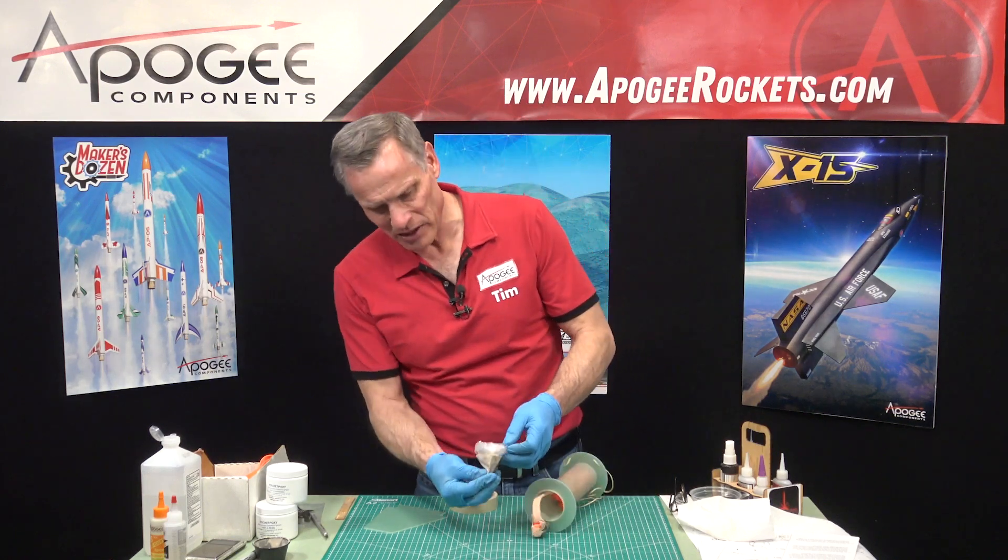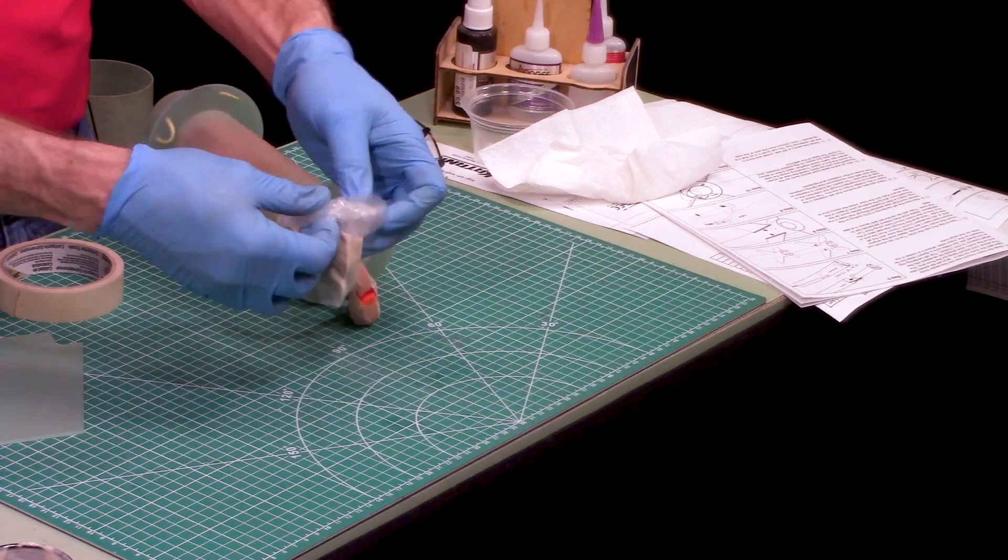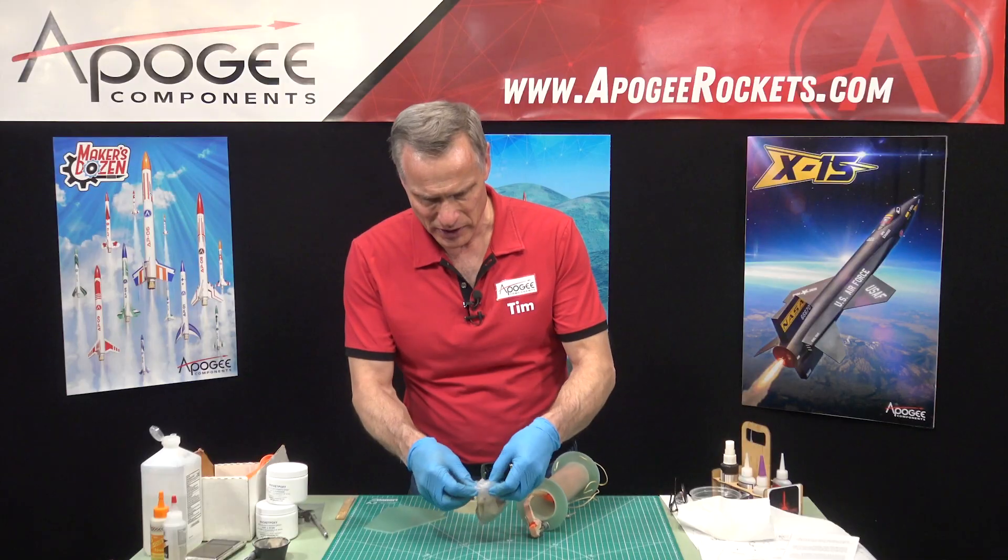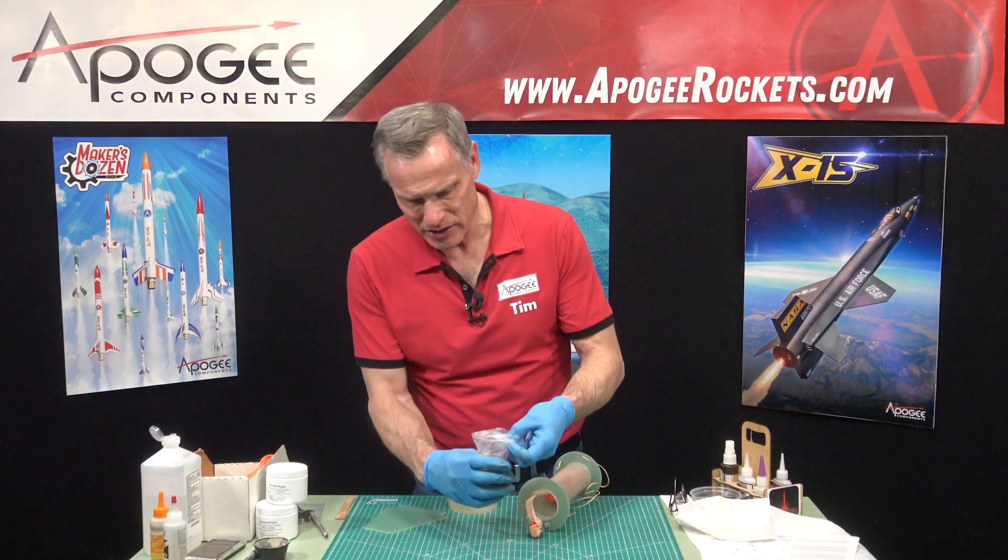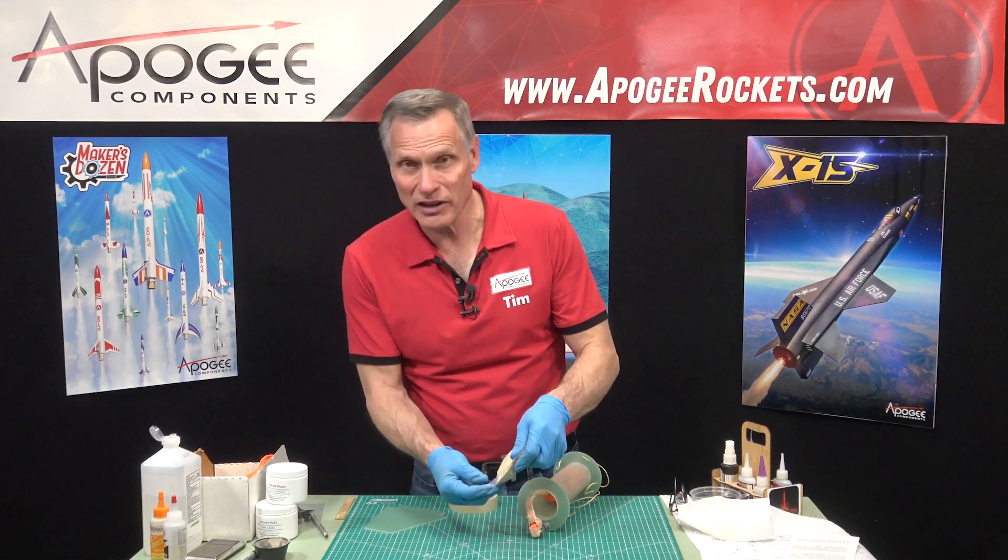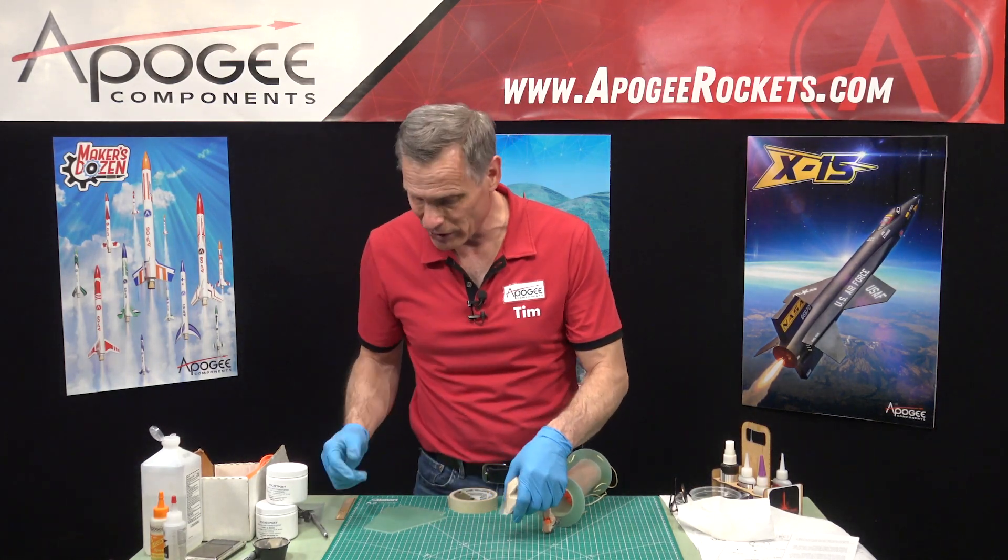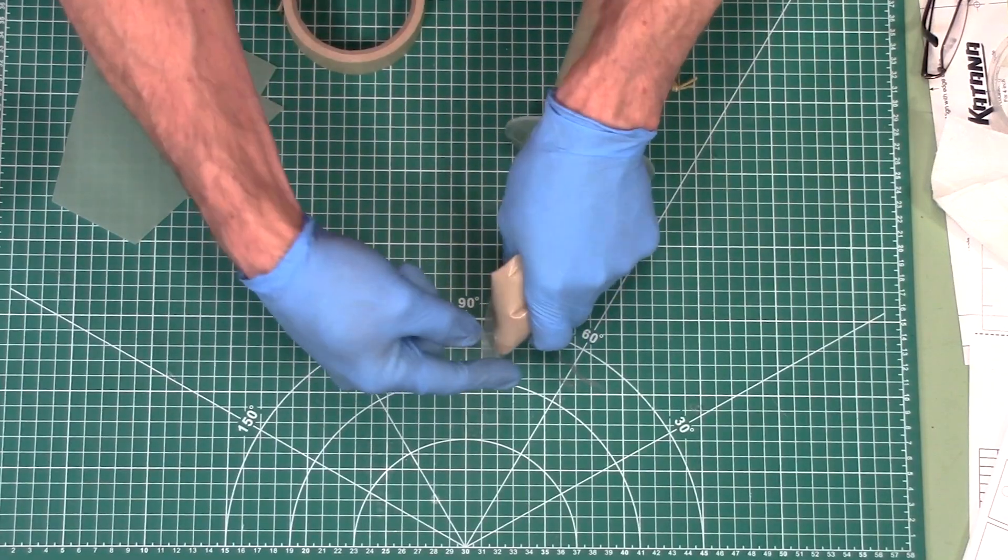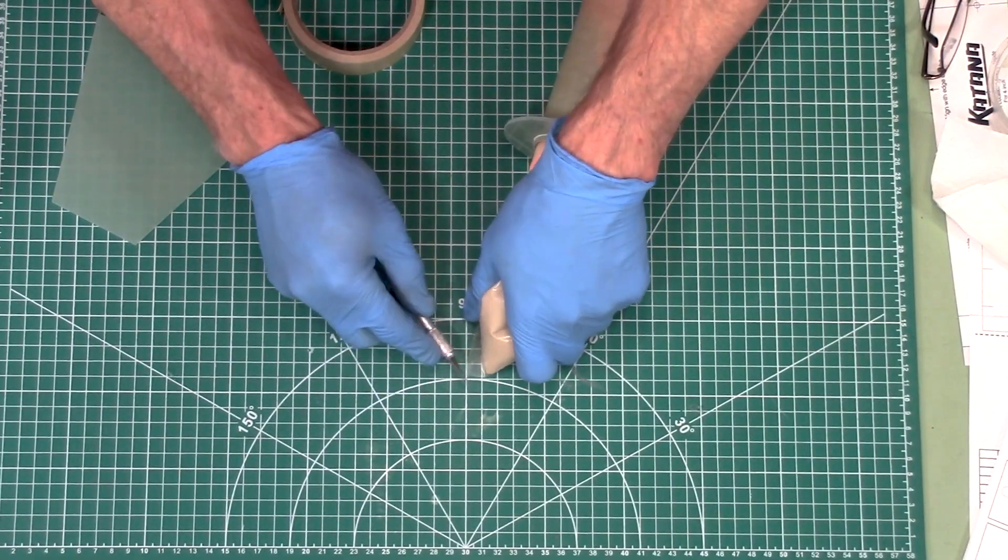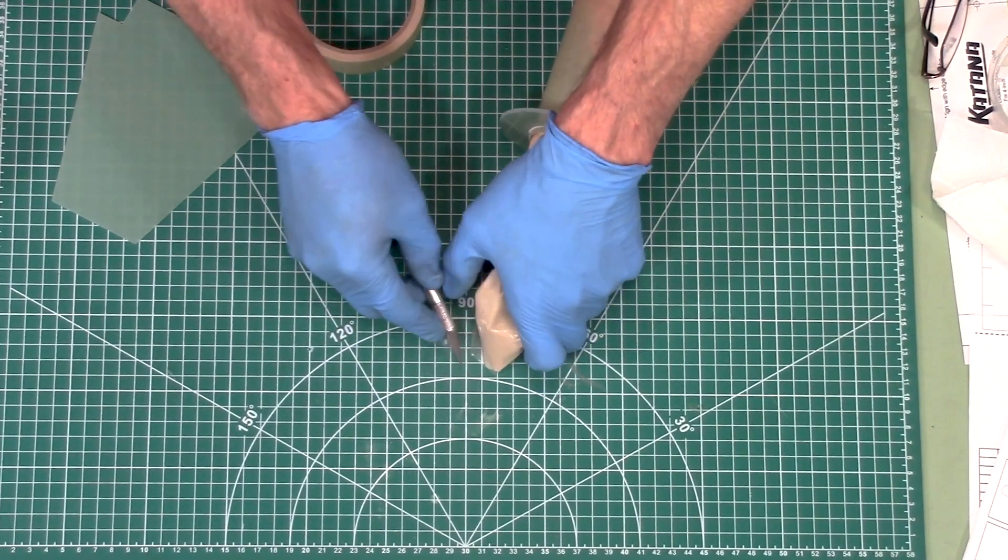I've mixed the epoxy and then poured it into a plastic bag. I'm going to use this to squeeze it out, kind of like what a cake decorator does where you have it and then you can just squeeze it out. I got it in the bag and I'm just going to cut the tip off the end of the bag.